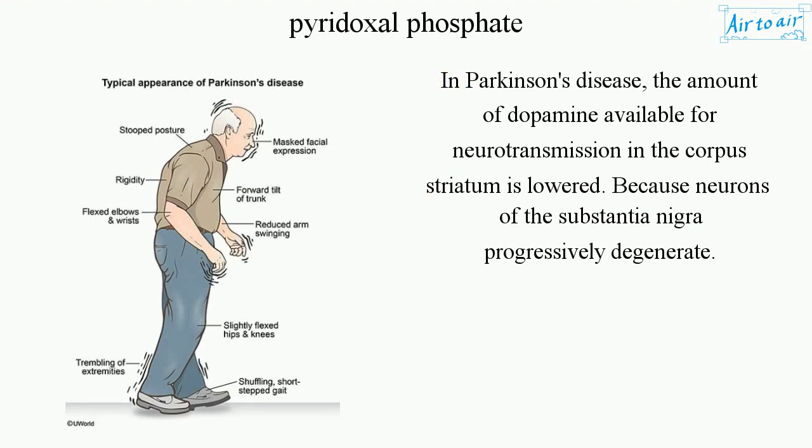In Parkinson's disease, the amount of dopamine available for neurotransmission in the corpus striatum is lowered, because neurons of the substantia nigra progressively degenerate.